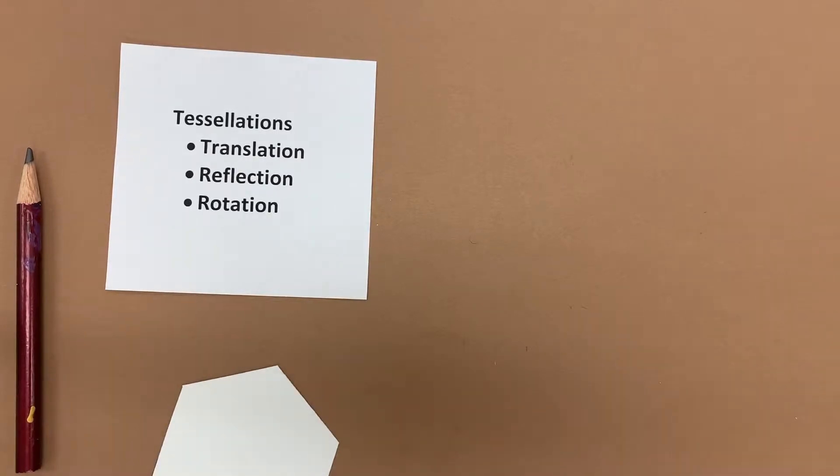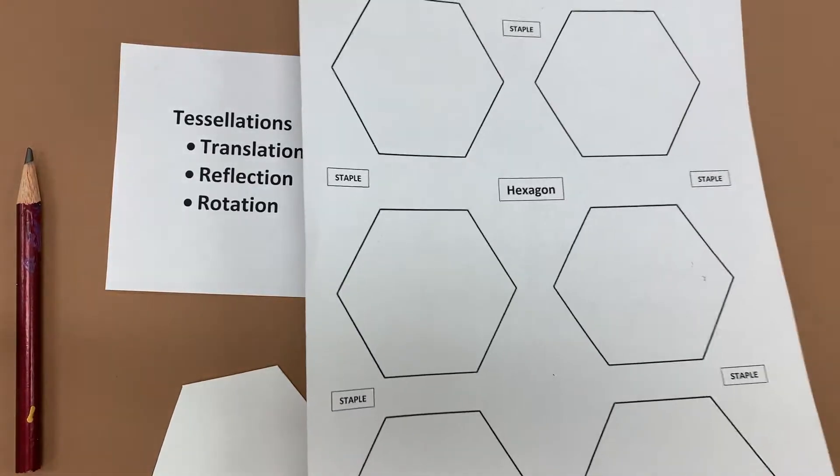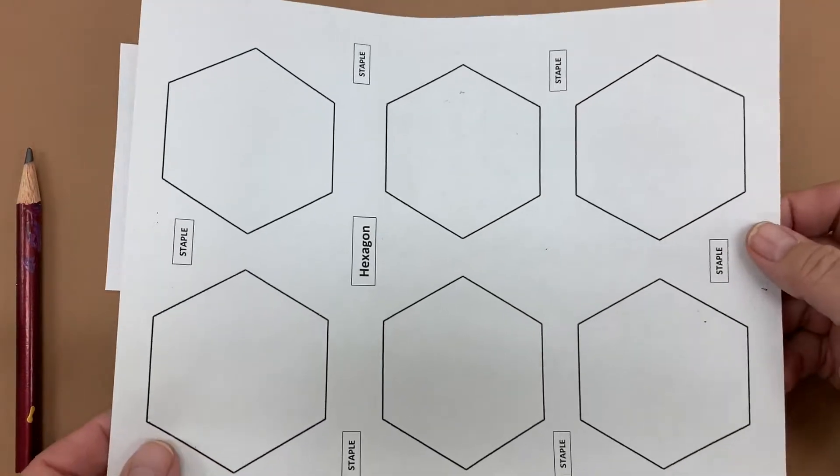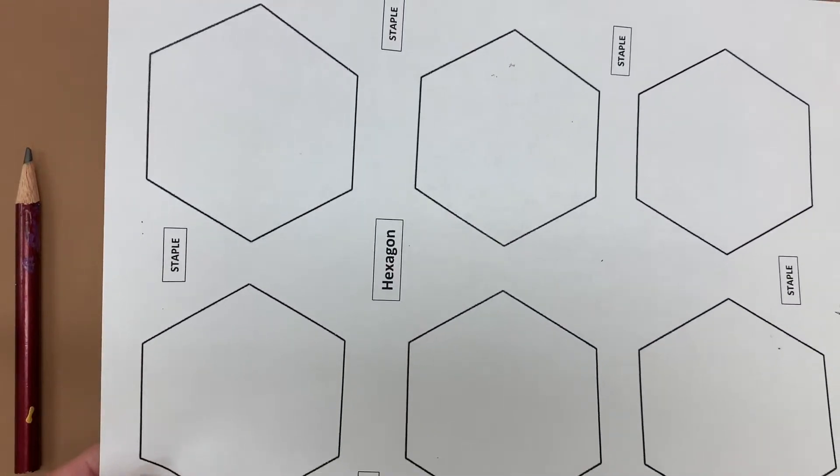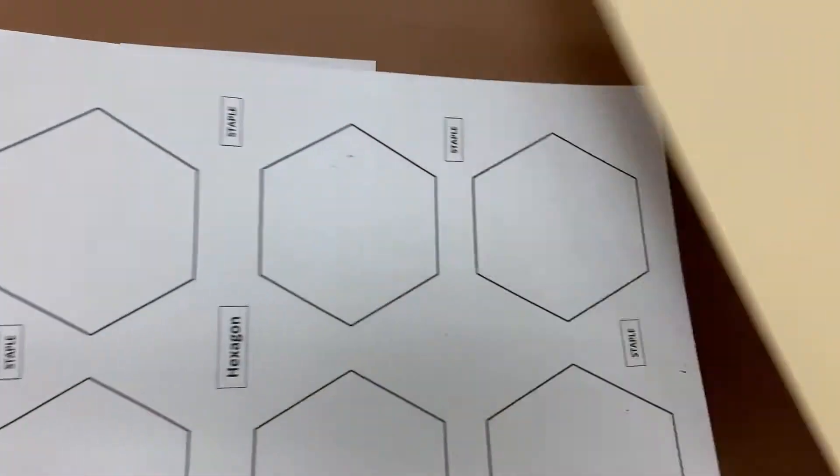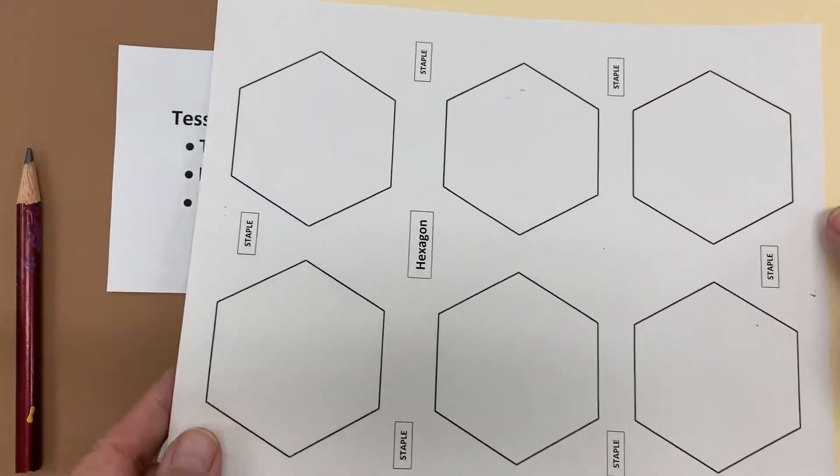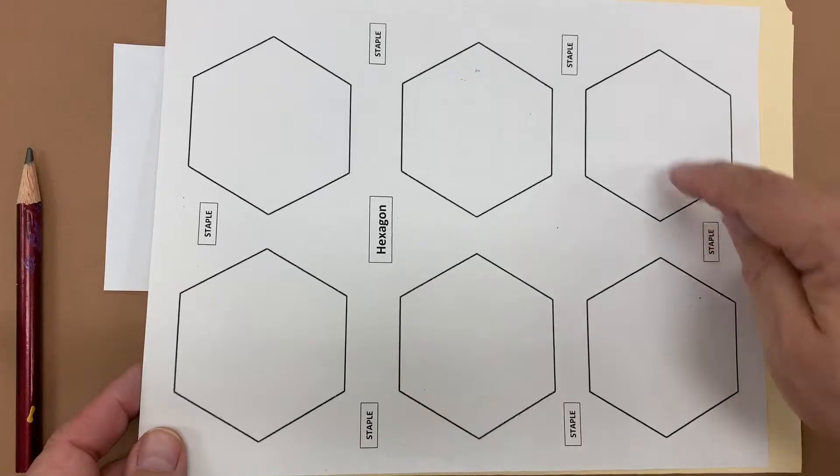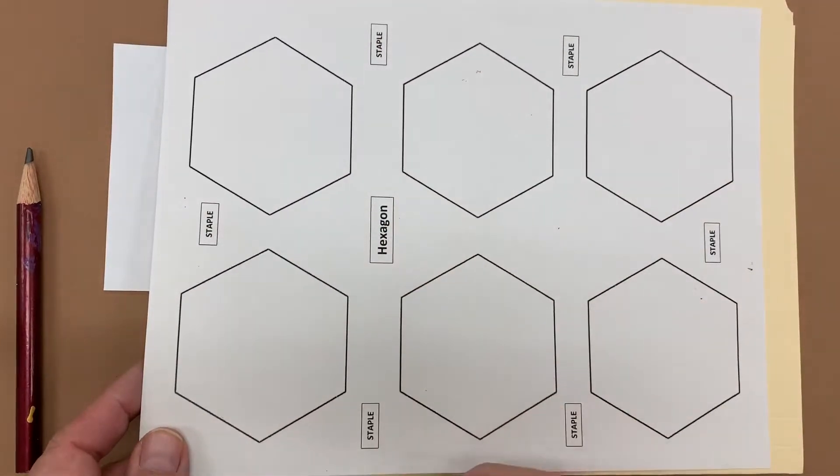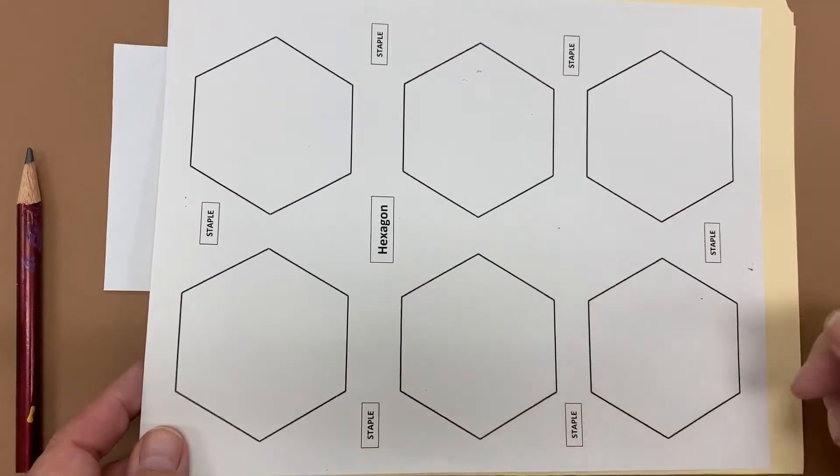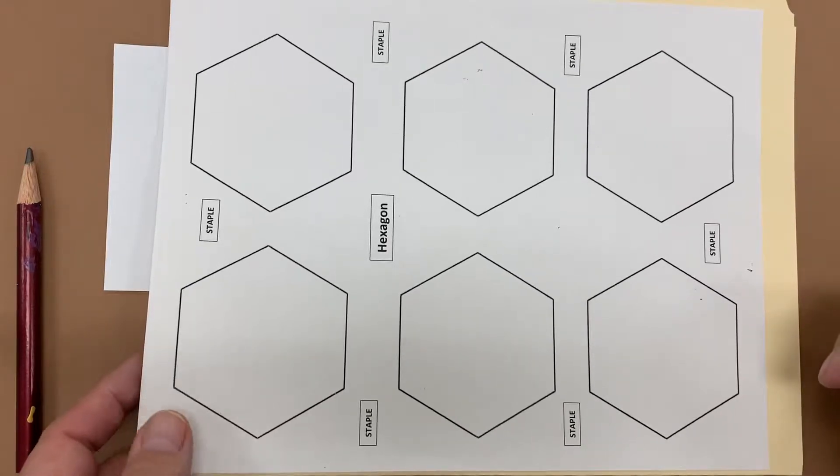But what I do is I print out a page of hexagons on copy paper and then you put some oak tag, you can use folders or whatever, and put that behind it. I actually put into my paper the word staple a few times so I have my students staple that and then go ahead and cut them out with a scissor and then you get perfect hexagons.